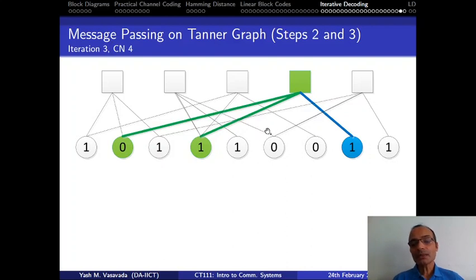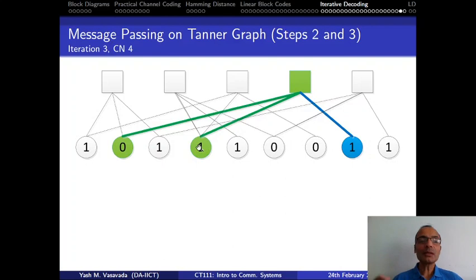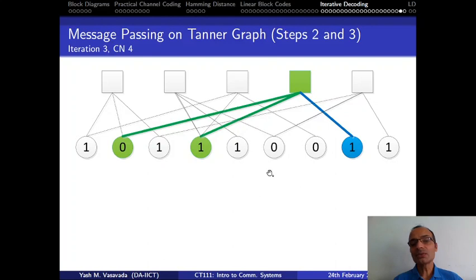More specifically, the amount of computations that each node has to do will not depend on the length of the code. The length of the code can become maybe a million bits, but what each CN and each VN has to do will depend only upon DC and DV.